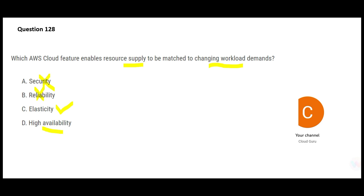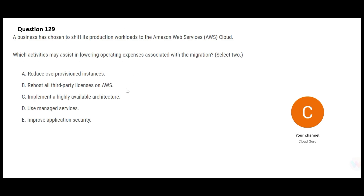Looking at D — high availability means the system does not go down and is mostly available for operations and business. It is not linked with supply and demand or managing compute resources. It is all about keeping the application up and running for a longer period of time. So C — elasticity — is my final answer for this question.